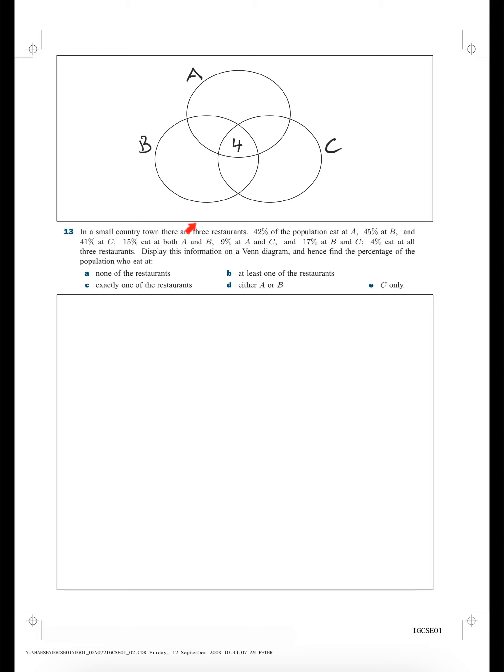We'll go around the three restaurants now. Restaurant A, 42% of the population eat at A, but the important information for us is that 15% eat at both A and B. Well, if 15% eat at A and B, that means in this area here there's 15. So if that's 15, that must be 11. So we'll put 11 there.